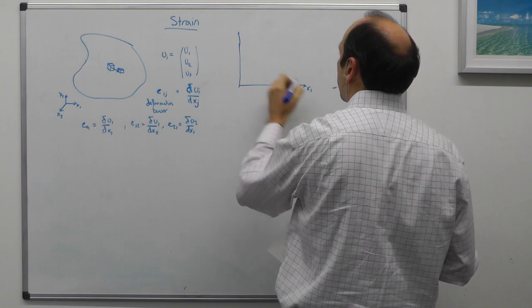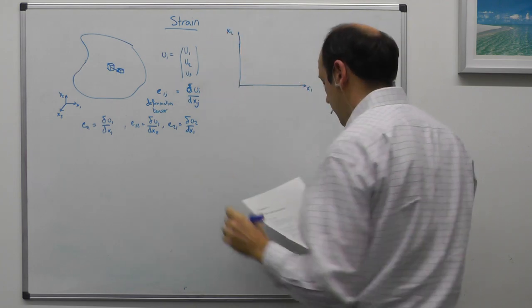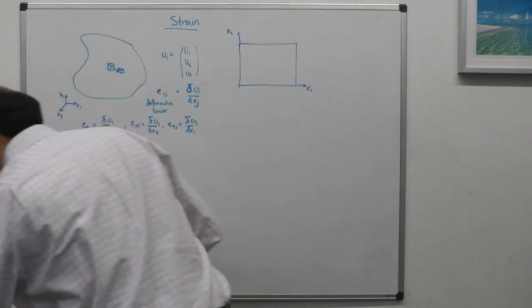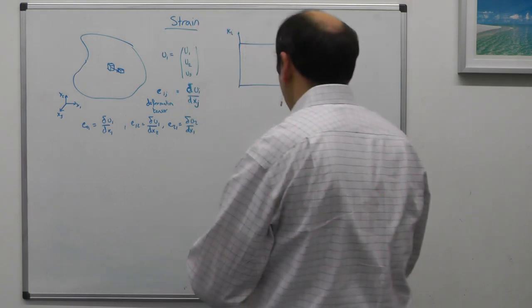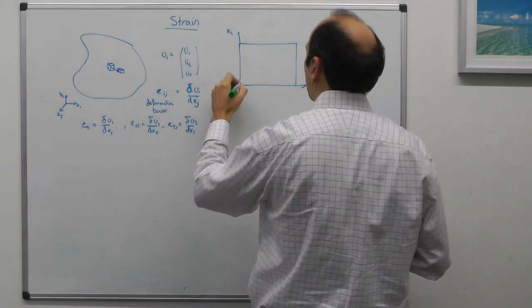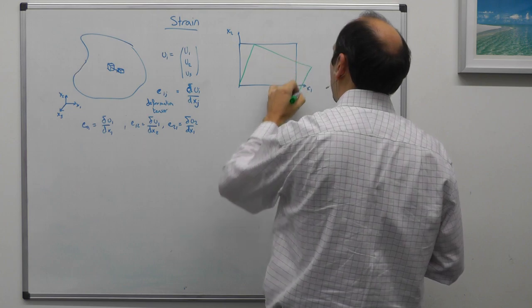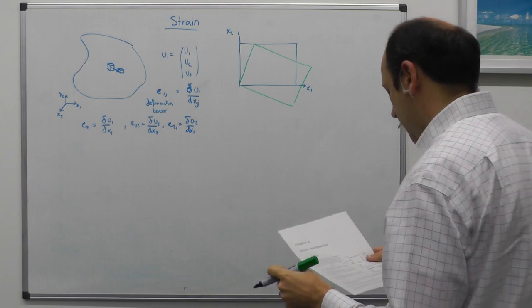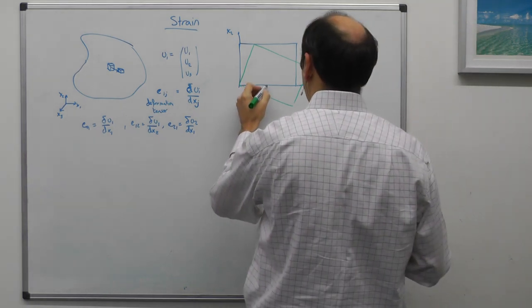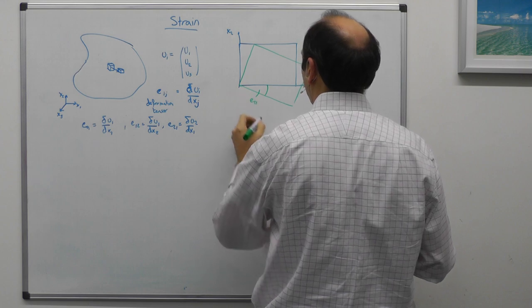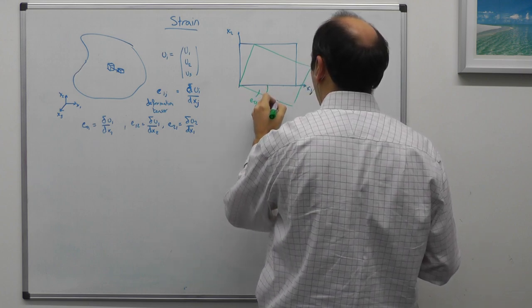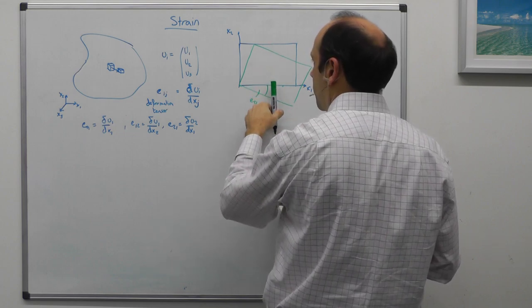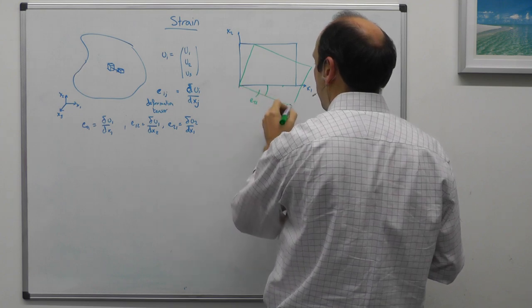So here's our x1 and x2, and here's our original body, and if our original body rotates, it does something like that. And what it's done is it's rotated a bit, and this would be e21, so this coordinate's moved to here, so it's rotated in the two direction, and that's the one basis vector that's moved.